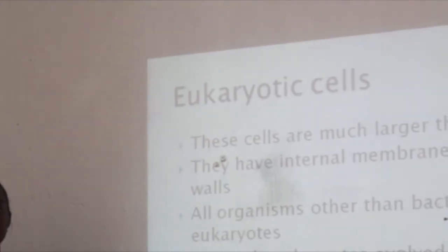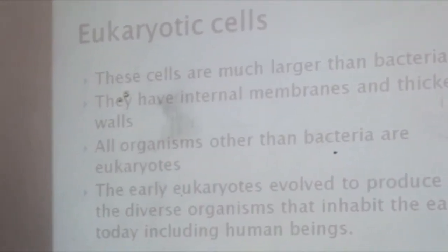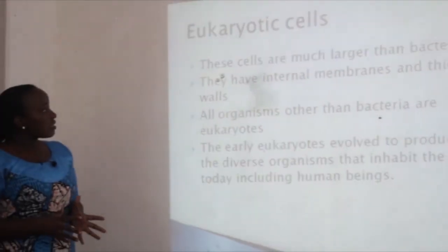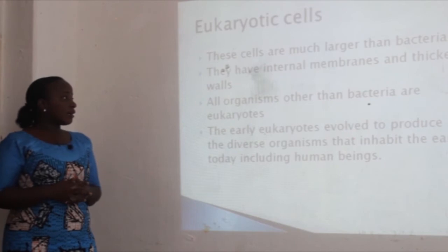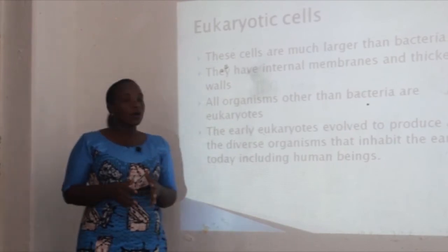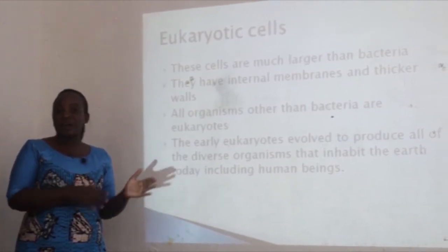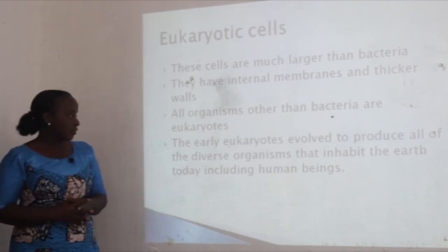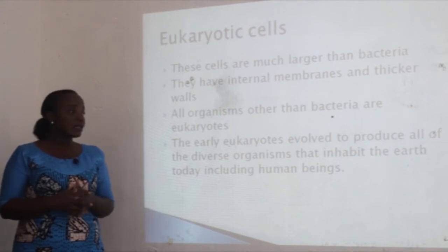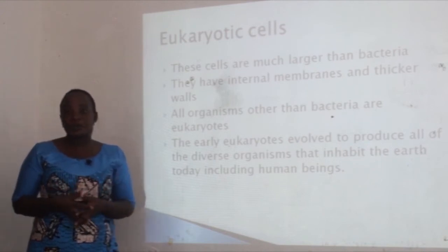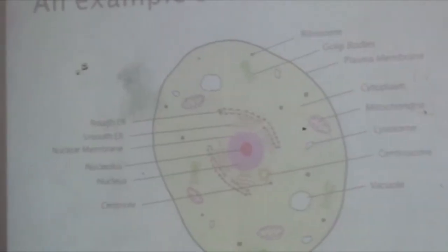The new bacteria created a conducive environment for other organisms to live on earth. We move now to eukaryotic cells. There are two types of cells: prokaryotic cells and eukaryotic cells. Eukaryotic cells are much larger than bacteria, have internal membranes, and have thicker walls. All organisms other than bacteria are eukaryotes. The early eukaryotes evolved to produce all the diverse organisms that inhabit the earth today, including human beings.